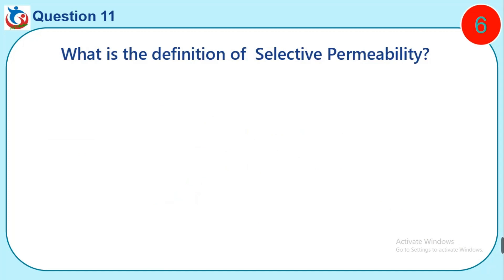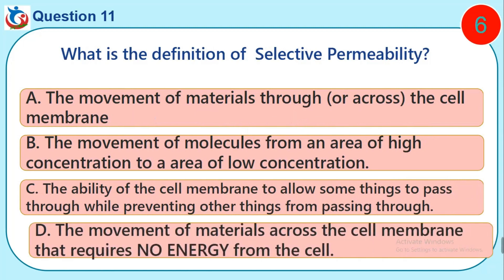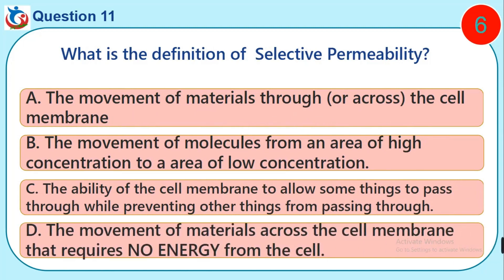Question 11. What is the definition of selective permeability? A. The movement of materials through or across the cell membrane. B. The movement of molecules from an area of high concentration to an area of low concentration. C. The ability of the cell membrane to allow some things to pass through while preventing other things from passing through. D. The movement of materials across the cell membrane that require no energy from the cell.